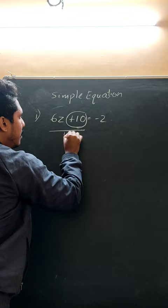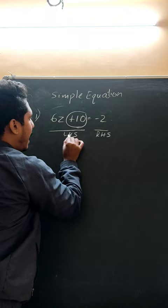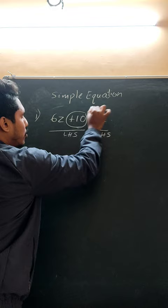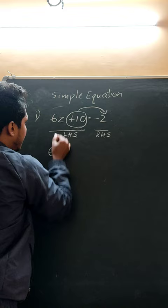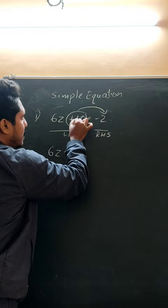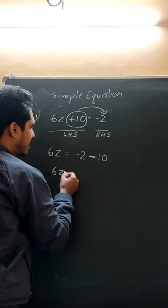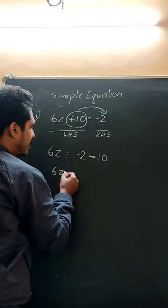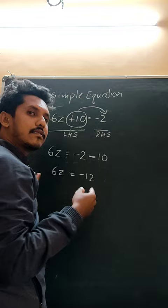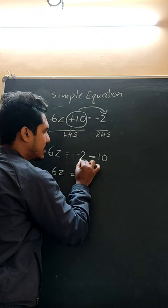This is the LHS — the whole left side — and this is the RHS — right hand side. To isolate 6Z, this term must be taken to the RHS. So 6Z stays as it is, equals minus 2 as it is, and plus 10 when it goes to the RHS becomes minus 10. When one term goes to the other side, the sign always changes. So 6Z equals minus 2 minus 10, which is minus 12.